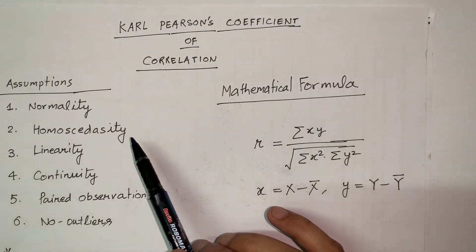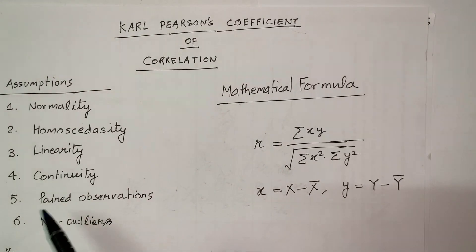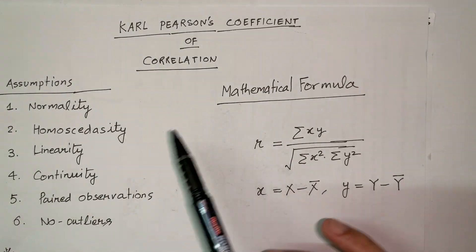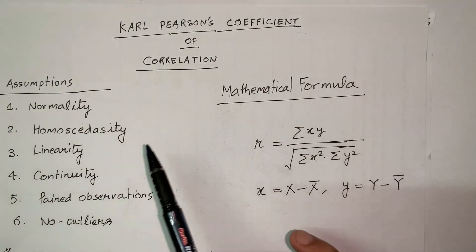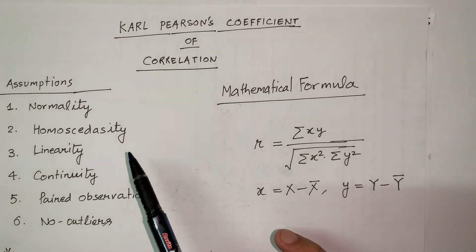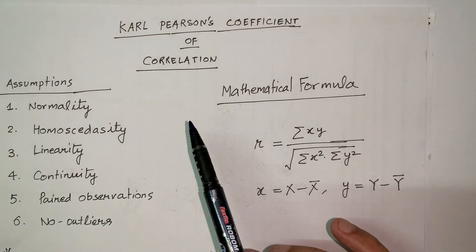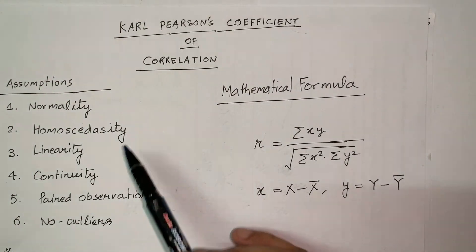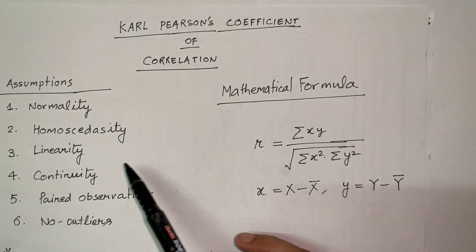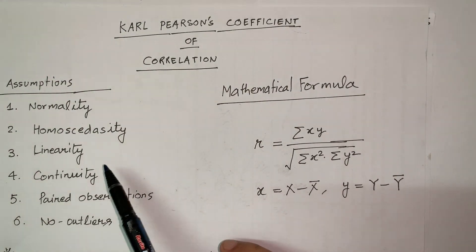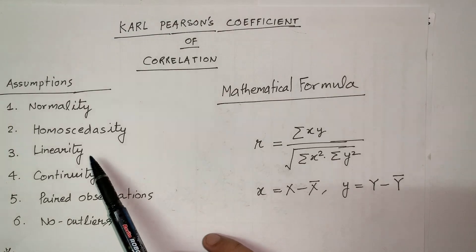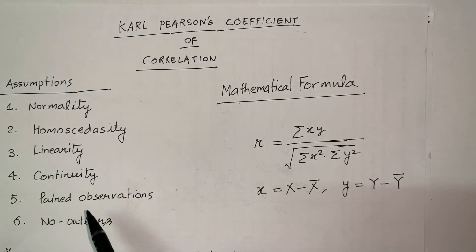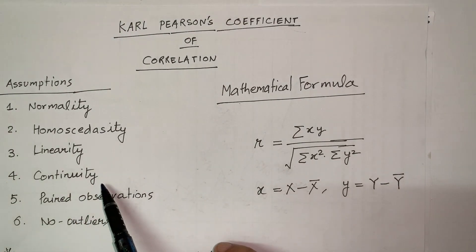The second assumption is homoscedasticity. I'll explain it through a graph: whenever you draw a best-fit line representing the relationship of two variables, the variance on both sides of the line should be the same. The relationship must also be linear in form.